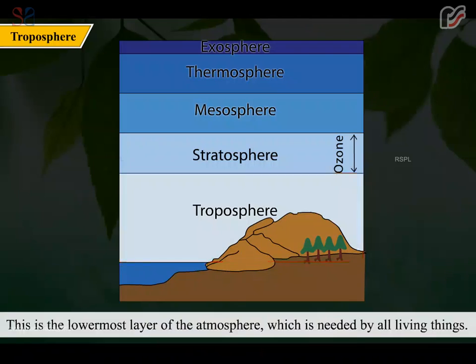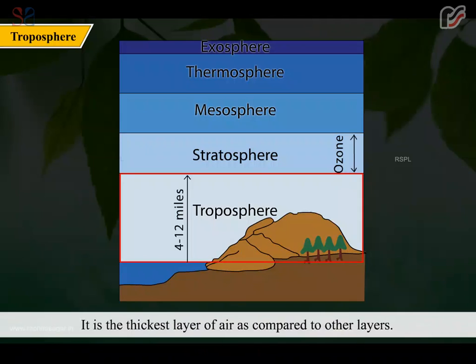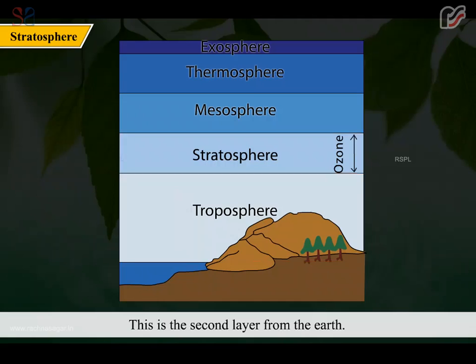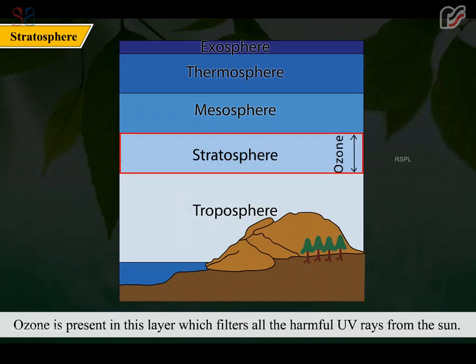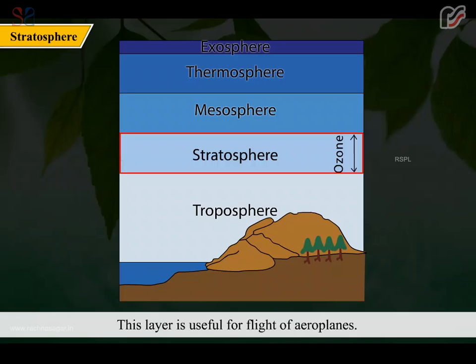This is the lowermost layer of the atmosphere which is needed by all living things. It is the thickest layer of air as compared to other layers. This is the second layer from the earth. Ozone is present in this layer which filters all the harmful UV rays from the sun. The air of this layer is less dense. This layer is useful for flight of aeroplanes.